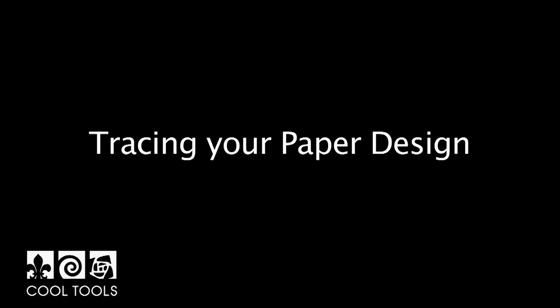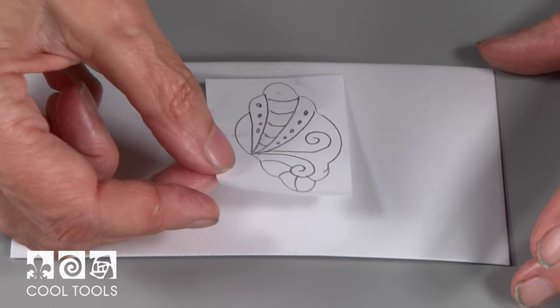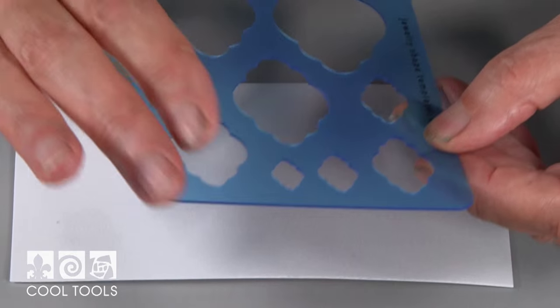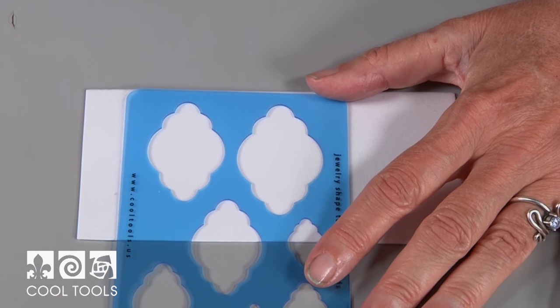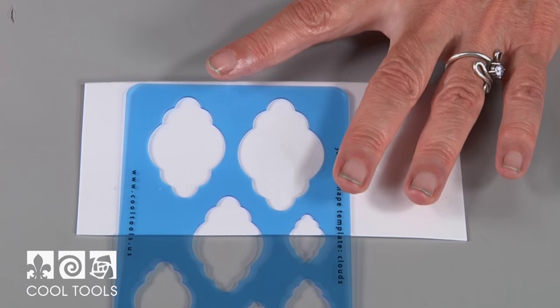Now I'm going to show you how to use that paper design I created earlier to trace a design onto the scratch foam. Pretty much everything is done the same except that you're using your paper design as a guide. First, I'm going to create the outer outline using the same template I used to create the design. And that's just going to give me a nice clear outer edge.